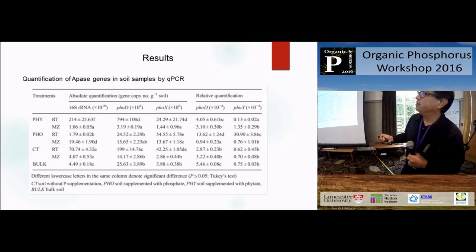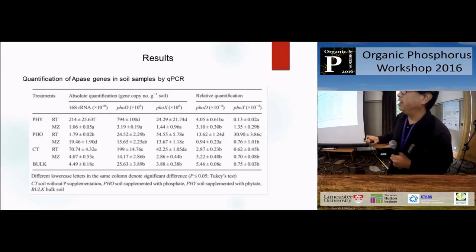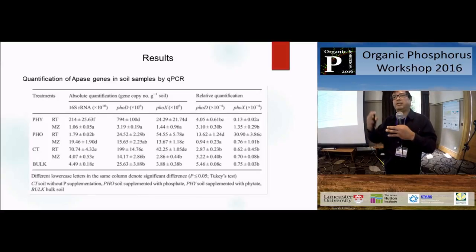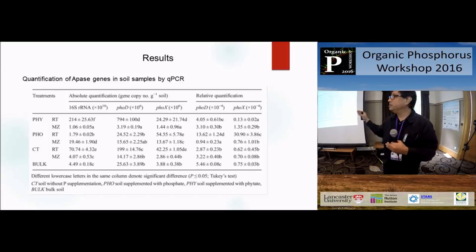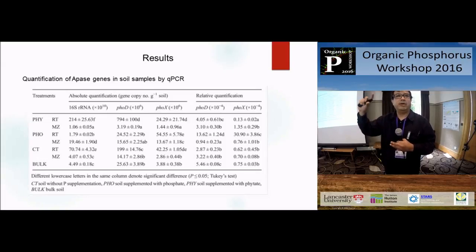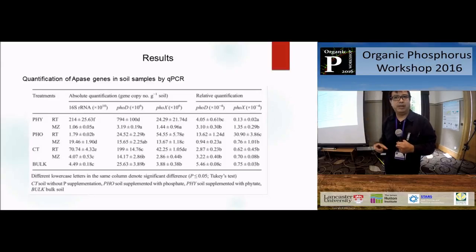In relation to phosphatase, in general, with the previous technique we didn't show significant differences within mature soil versus root tip. But when we check the qPCR, we can see in root tip we have more diversity, richness, and phosphatase bacteria. We can find some difference in both compartments in the plant.